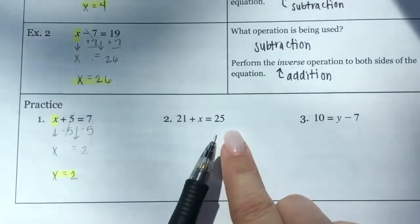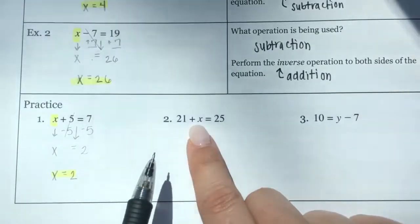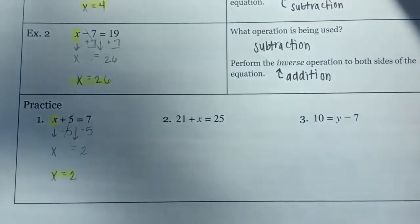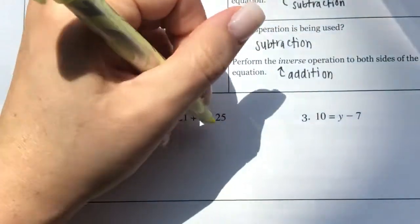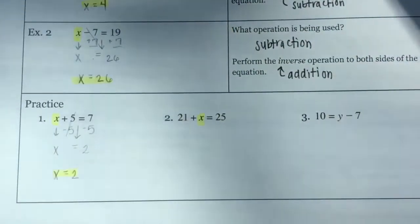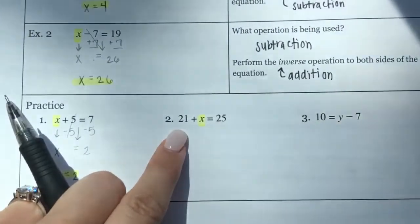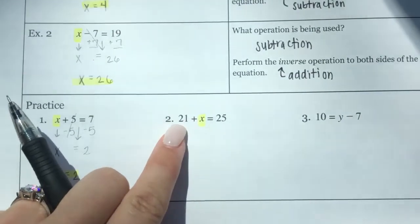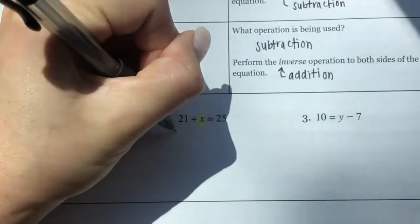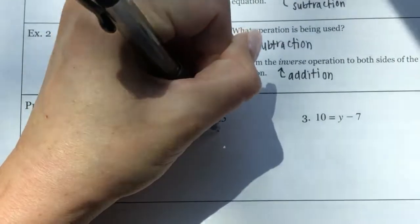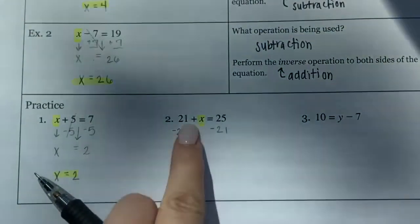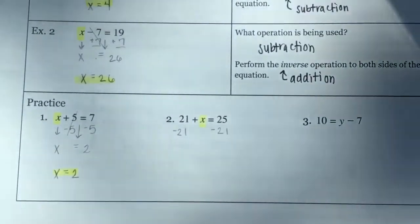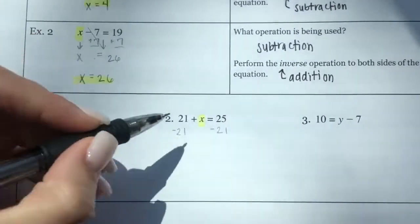For practice problem 2: 21 + X = 25. These are in a different order, which is a little tricky, but our goal is still to get X by itself. A positive 21 is being added to X, so the opposite would be to subtract 21. The operation is addition, so to undo it I'll subtract 21 from both sides — it's okay if it's in a different order.